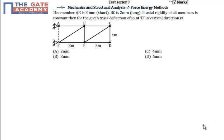This question asks: the member AB is 3mm short, BC is 2mm long, axial rigidity of all members is constant, and then for the given truss, deflection of joint D in vertical direction is to be calculated.